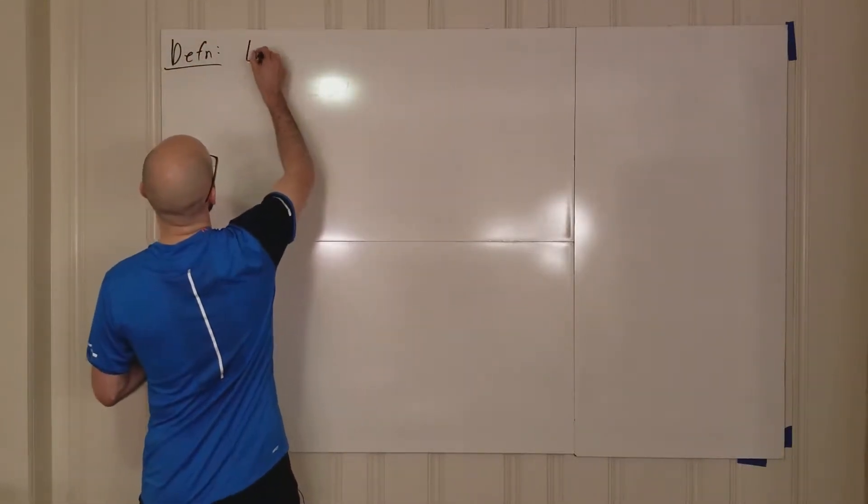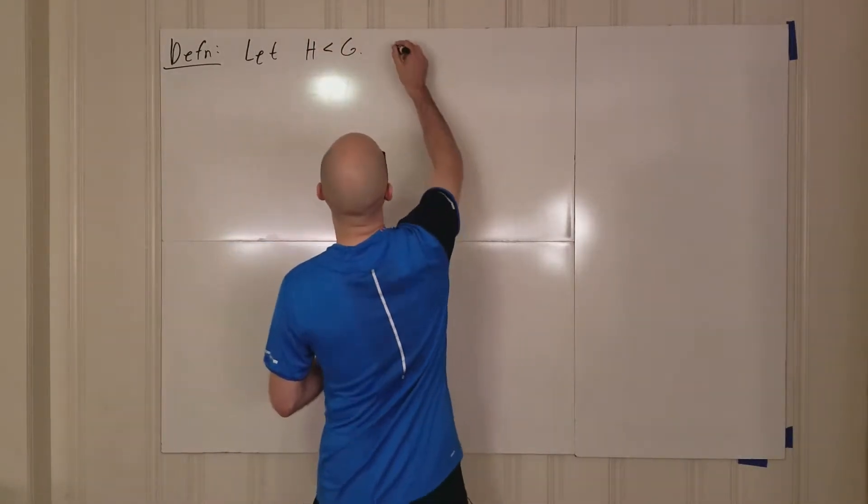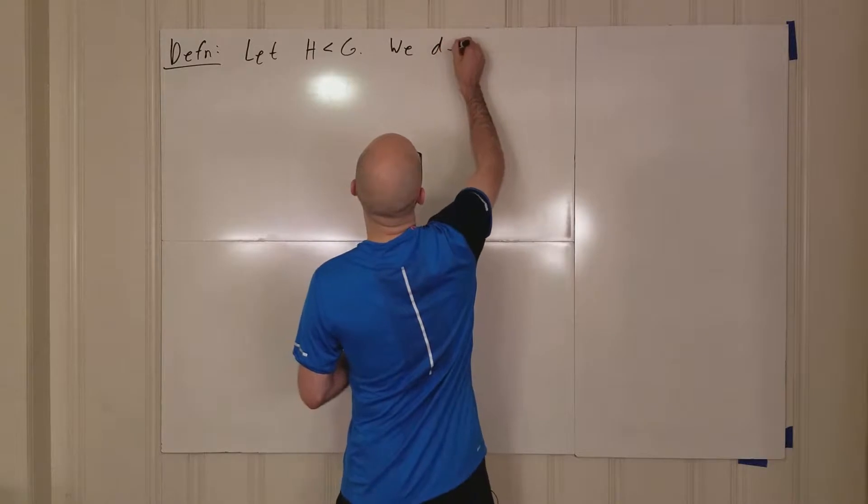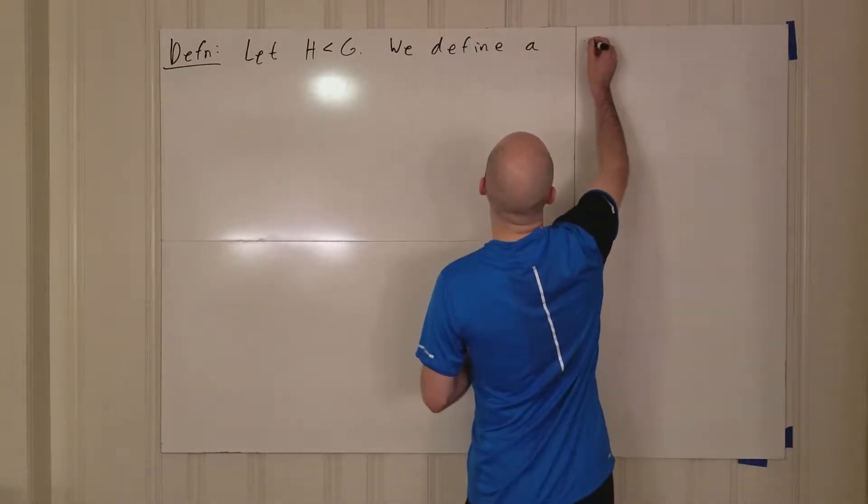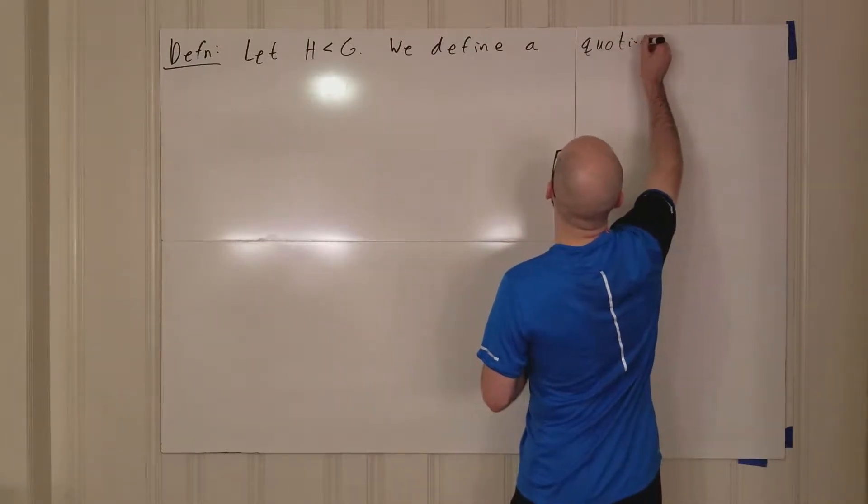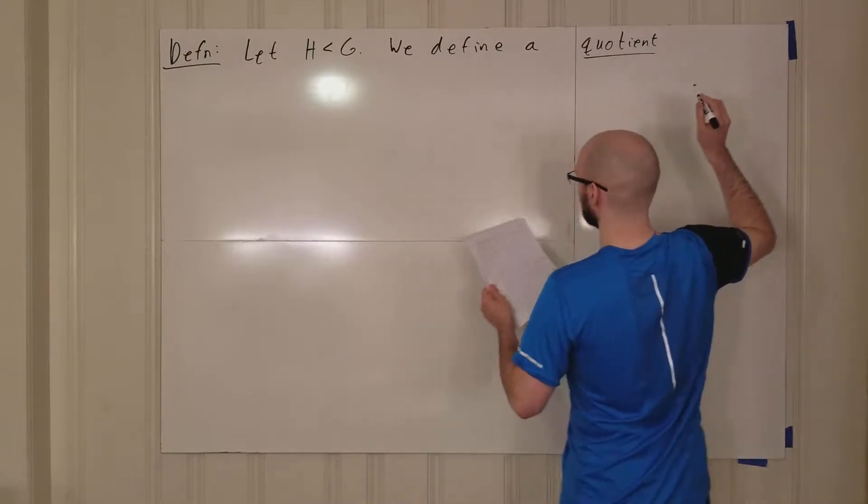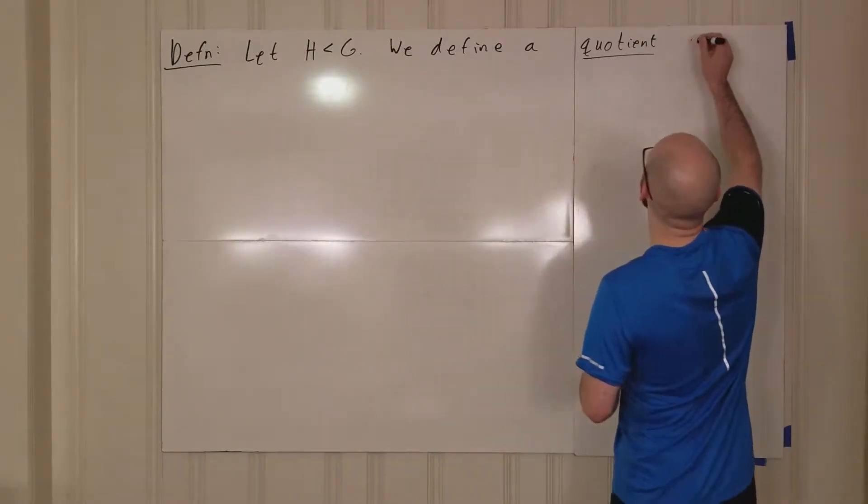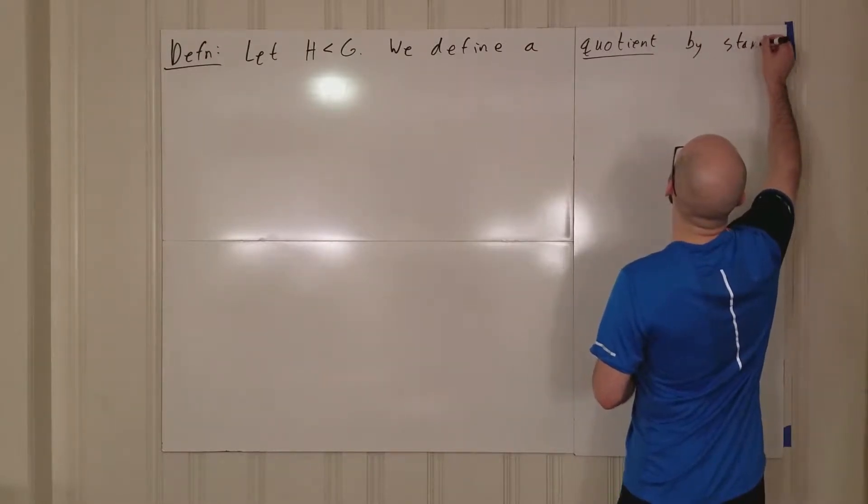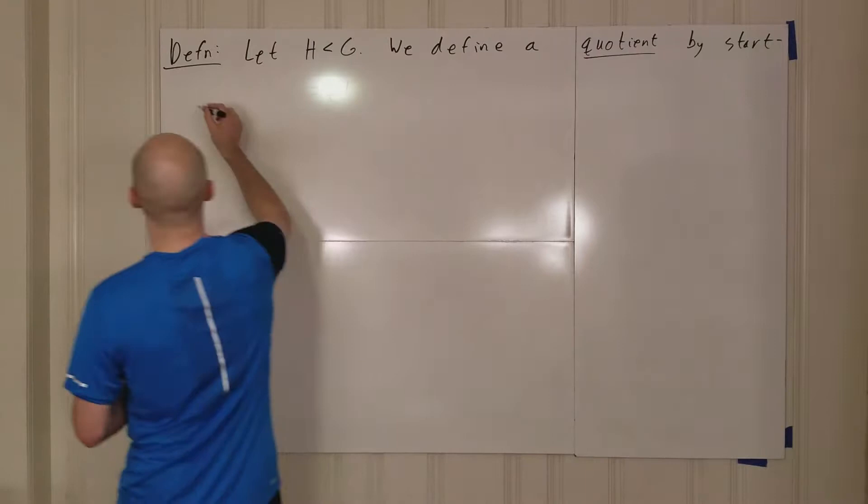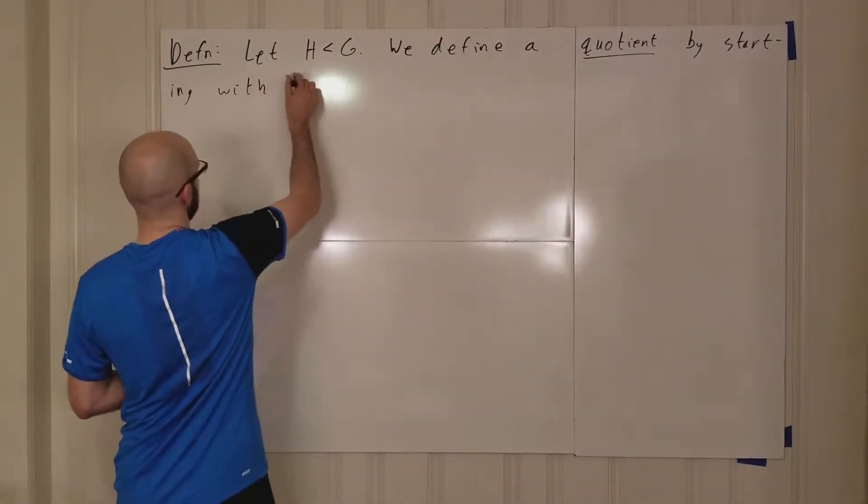I'm going to let H be a subgroup of G. We define a quotient by starting with the set.